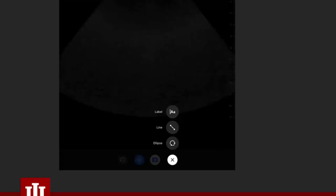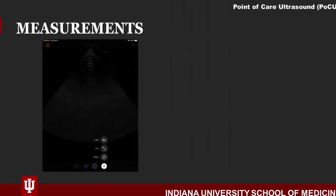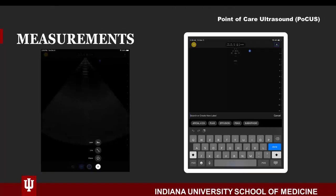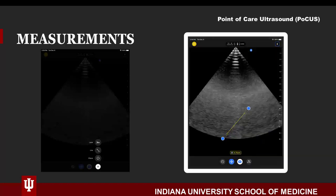Additional options available on the frozen screen are text annotation, line measurements, or elliptical measurements. Once you initiate the alpha dimension icon at the bottom right, these options will appear. The label icon provides common annotations found within the selected preset. You also now have the option to add plain text using the provided keyboard. If you discover a lesion or anomaly while performing an evaluation, obtaining a measurement is often helpful.